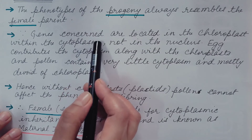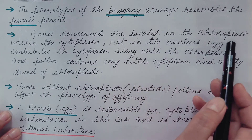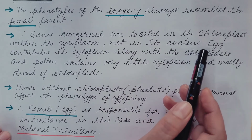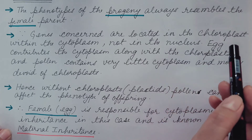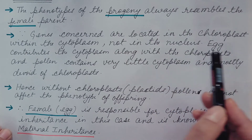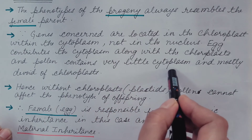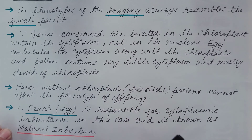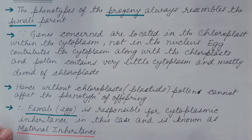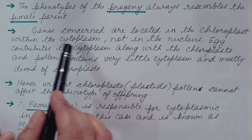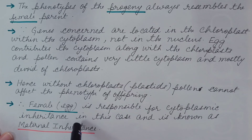We can conclude that the phenotype of the progeny always resembles the female parent. The genes responsible for leaf color are located in the chloroplast, which is present in the cytoplasm and not in the nucleus — hence this is cytoplasmic inheritance. The egg contributes the cytoplasm along with the chloroplast, while pollen grains contain very little cytoplasm and are mostly devoid of chloroplast. Therefore, pollen cannot affect the phenotype of the offspring, and this is known as maternal inheritance.